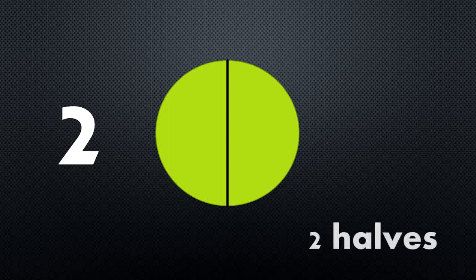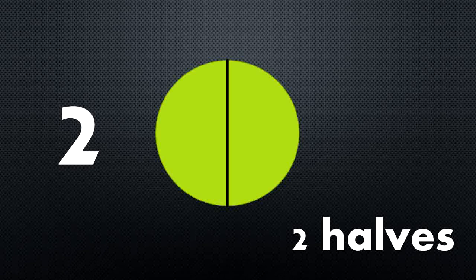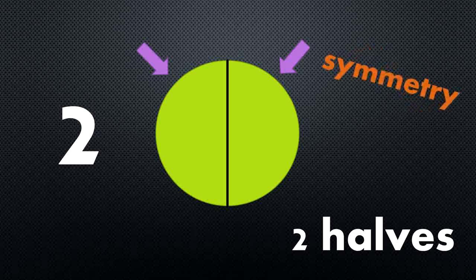Here's another circle. But if I divide it into two equal sections, then that means that I have two halves. One, two. Each of the sections that you can see are the same size. And when I drew that line down the center, both sides look exactly the same. This is symmetry.